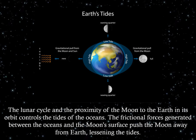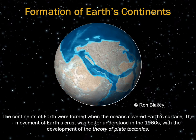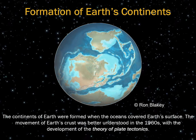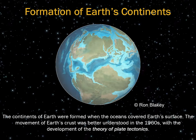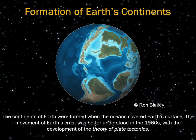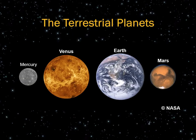The lunar cycle and the proximity of the Moon to Earth control the tides of the oceans. The frictional forces generated between the oceans and the Moon's surface push the Moon away from Earth, which will lessen the tides over time. The continents of Earth were formed when the oceans covered Earth's surface, and the movement of Earth's crust was better understood in the 1960s with the development of plate tectonics theory. There are four terrestrial planets in the solar system: Mercury, Venus, Earth, and Mars.